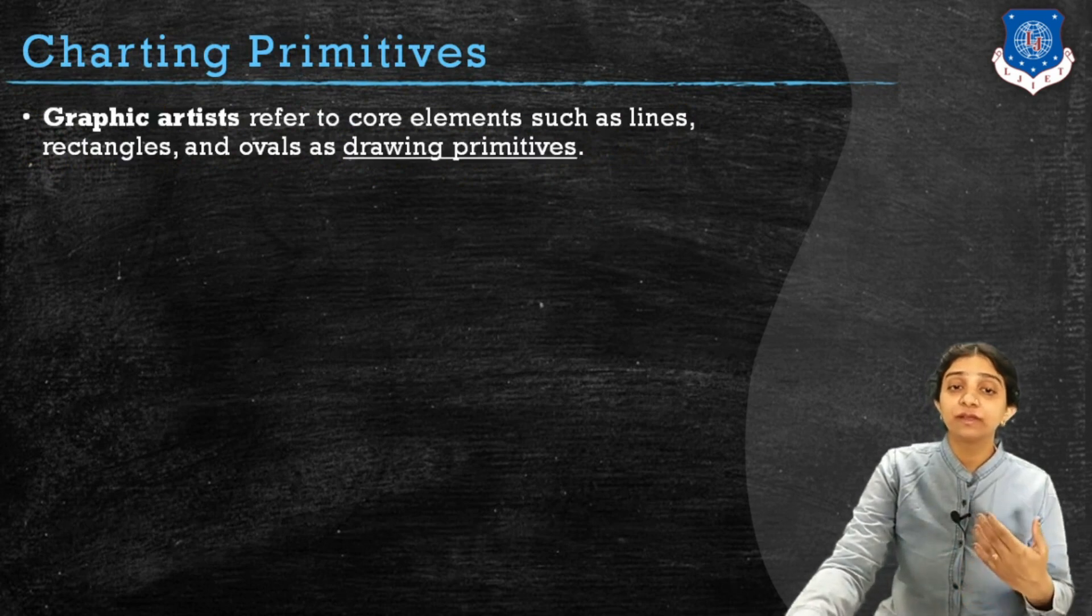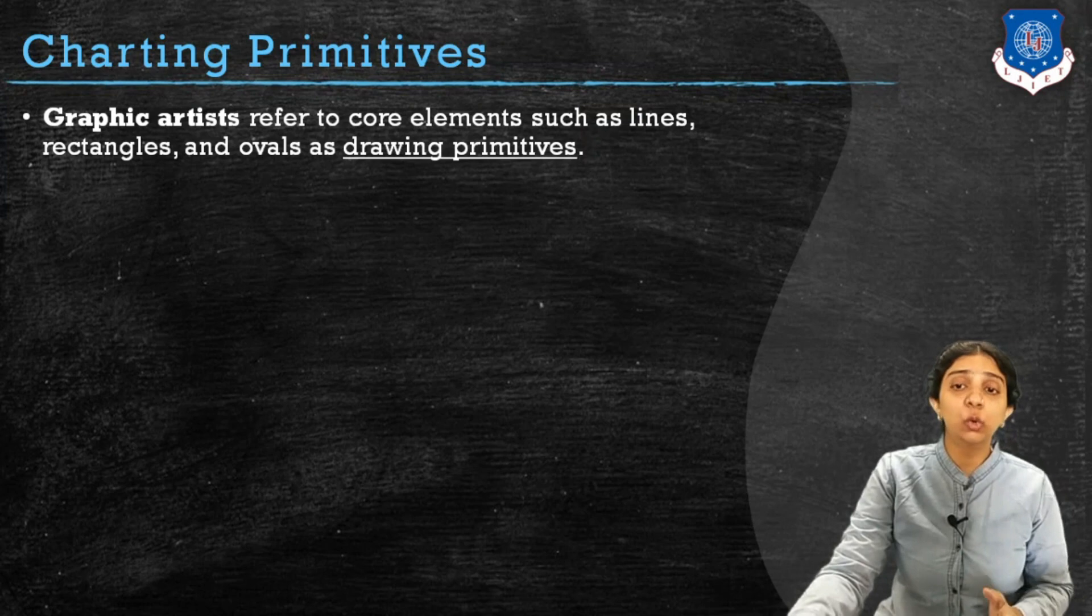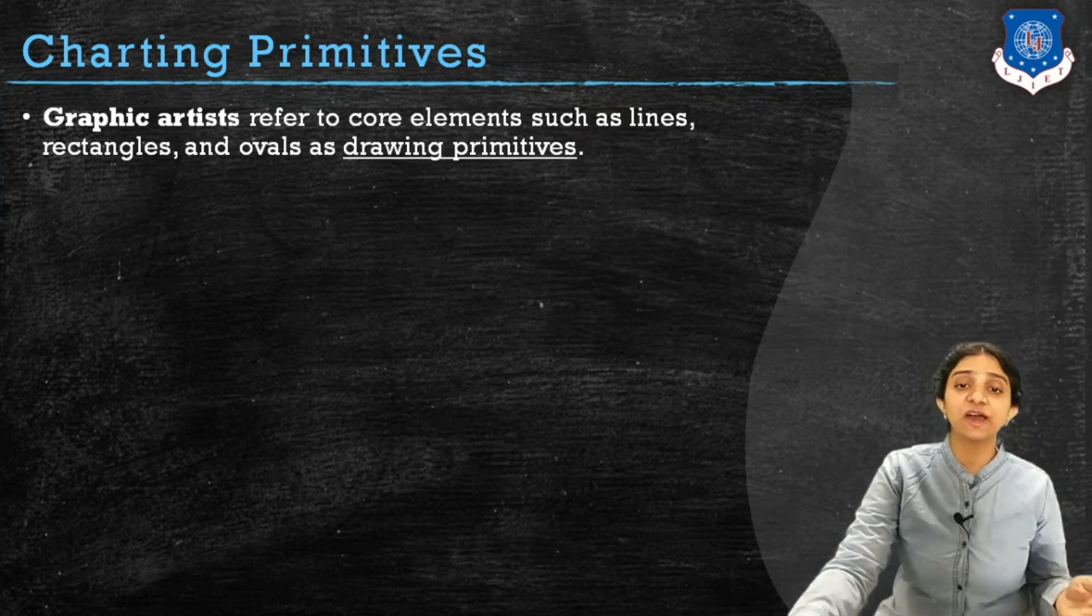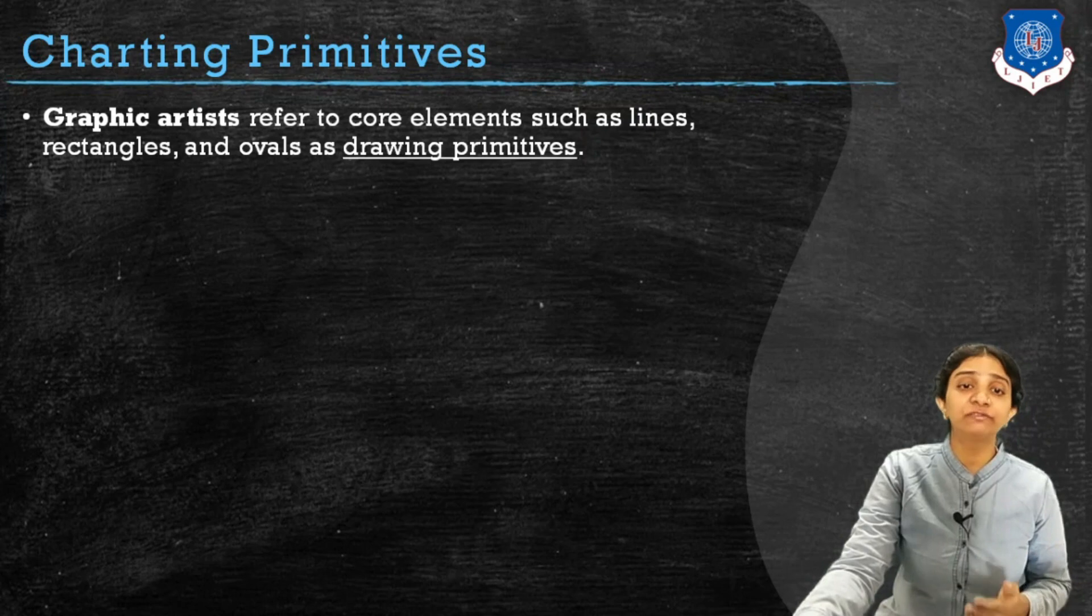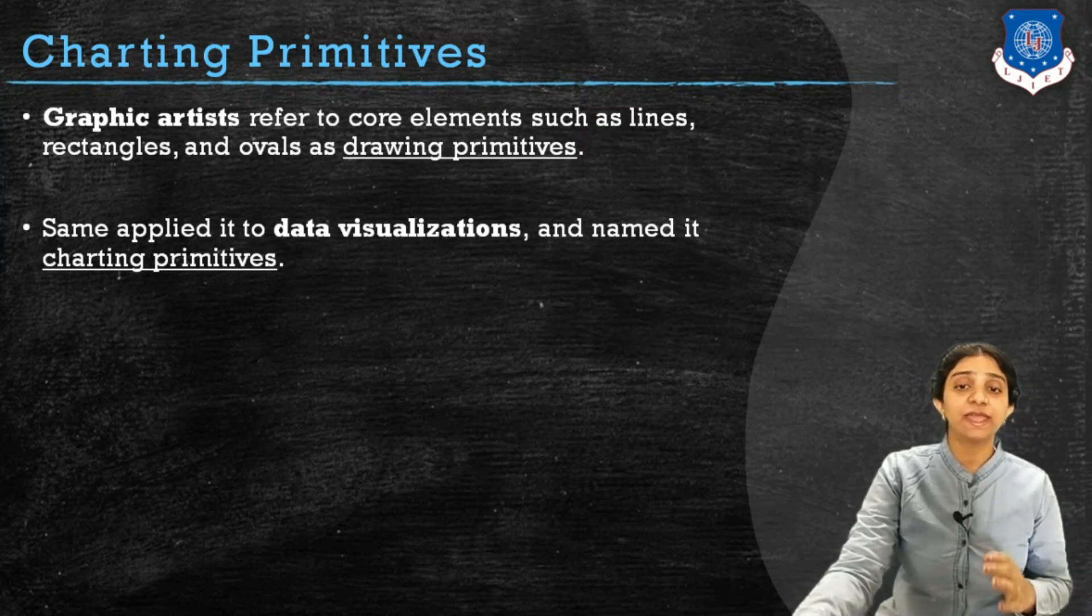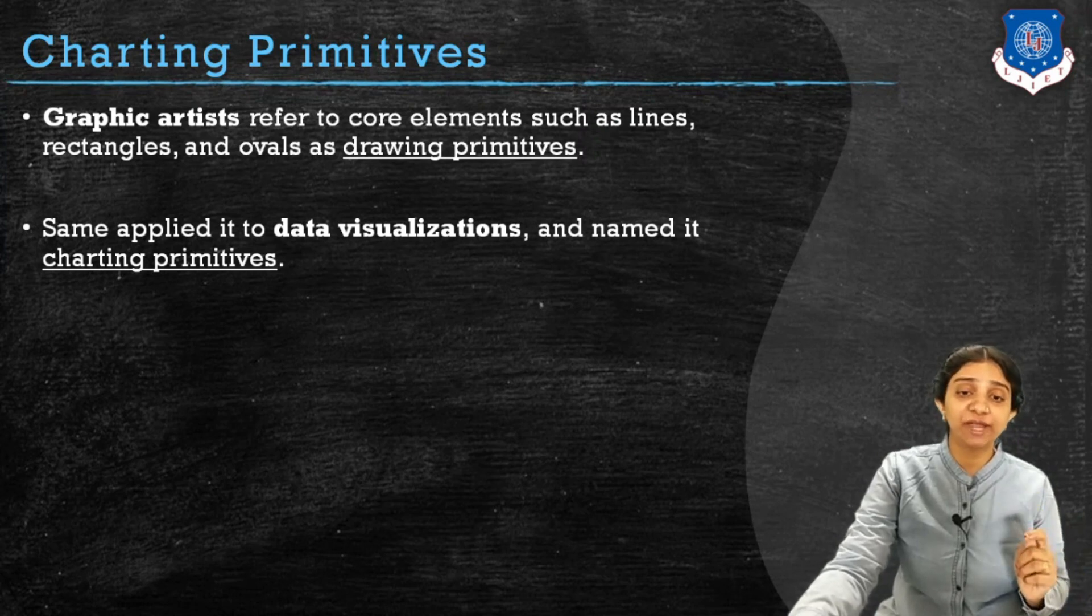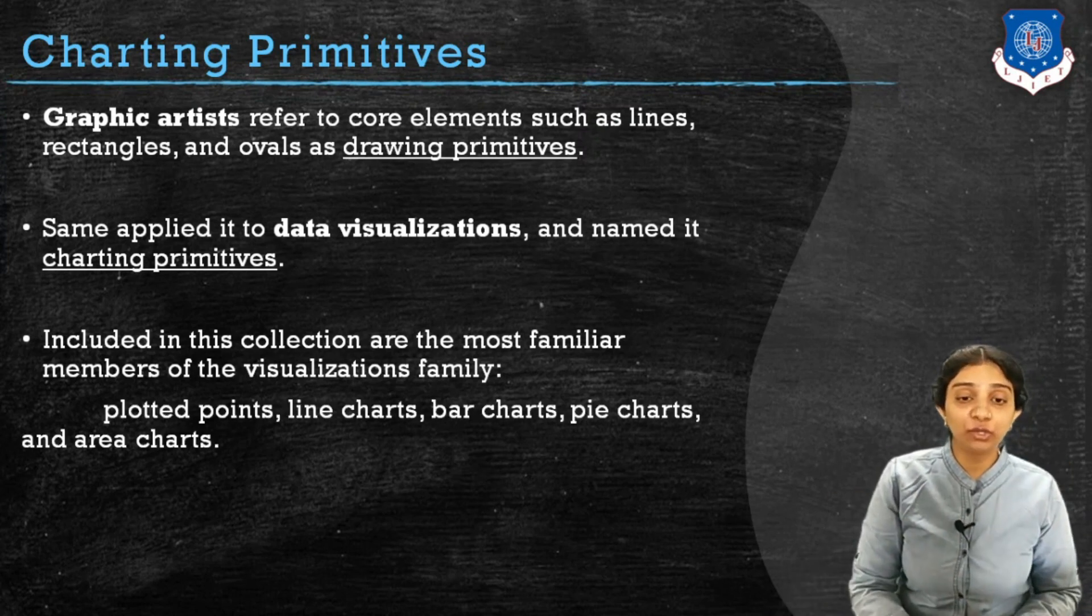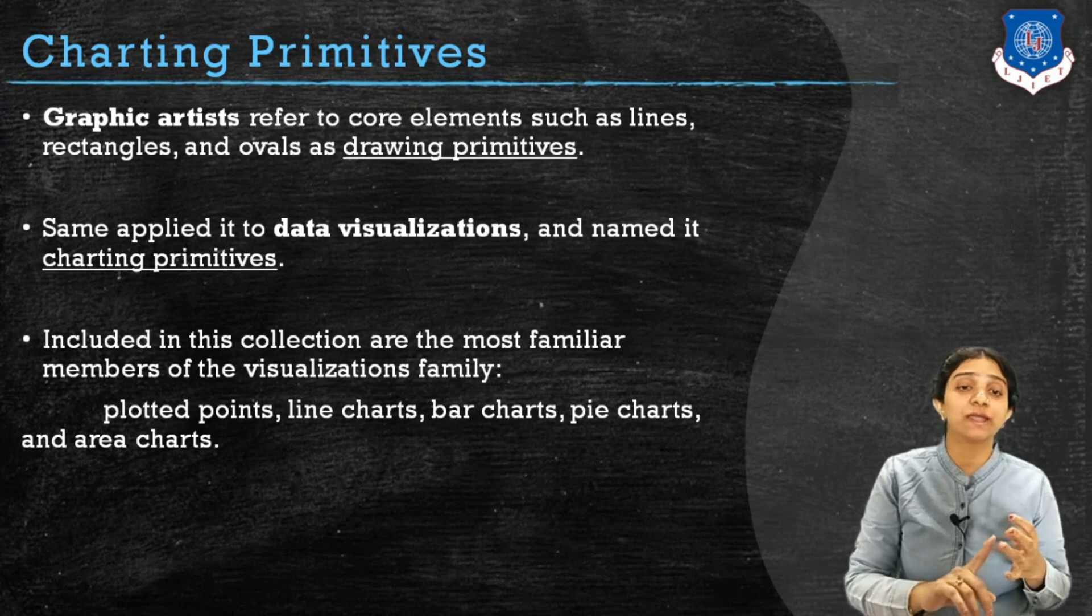Let us understand what are charting primitives. Being a graphic artist, drawing primitives are elements such as points, lines, rectangles, ovals, and arcs. These same elements, if applied to data visualization, are called charting primitives. This collection includes most familiar members such as plotted points, line charts, bar charts, pie charts, and area charts.